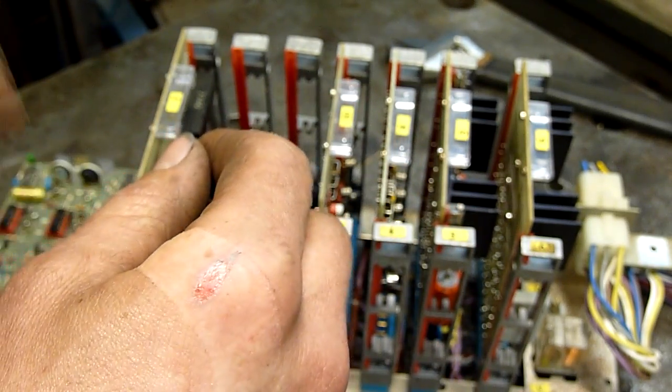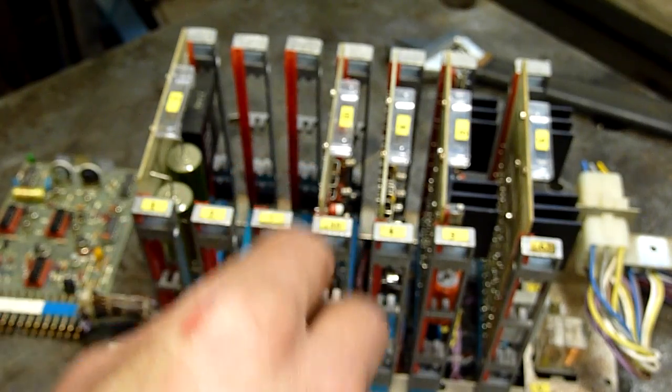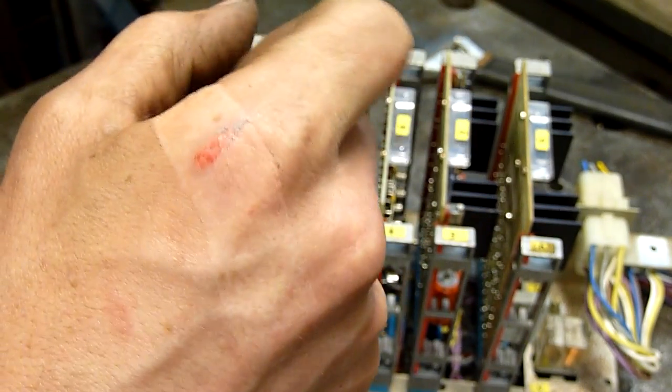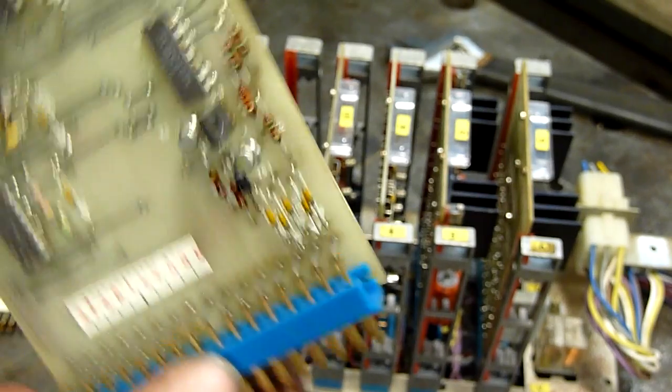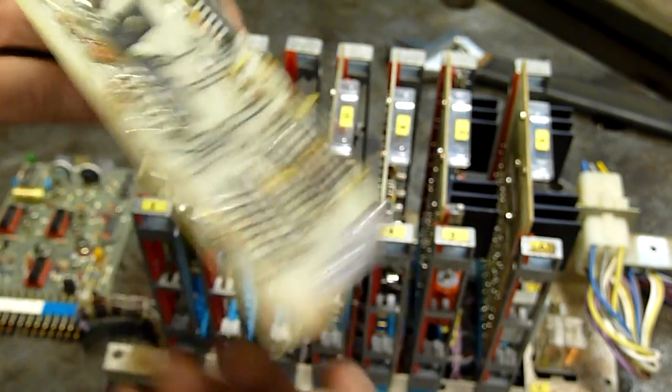And in case you're wondering what I did to my knuckle, well, linishing belts and knuckles are not meant to contact each other, but unfortunately sometimes they do, and it's not always fun.